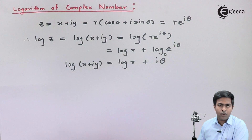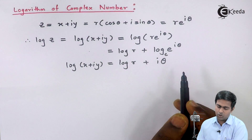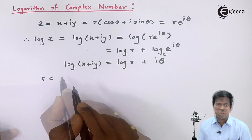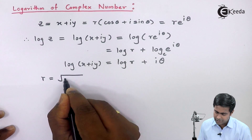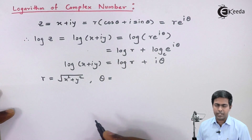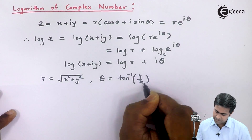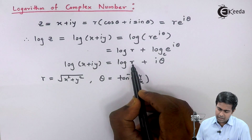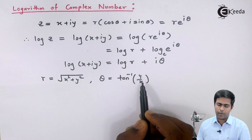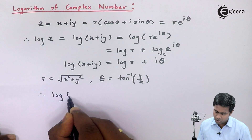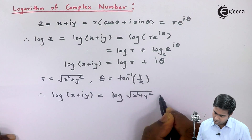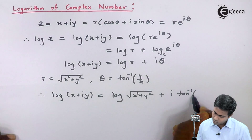Now we also have to find out the values of r and theta. We have seen that r is the modulus, represented by the formula root of x squared plus y squared. Similarly, theta is called the amplitude, represented by the formula tan inverse of y by x. Substituting these, the formula for log of x plus iy becomes log of root of x squared plus y squared, plus i tan inverse of y by x.